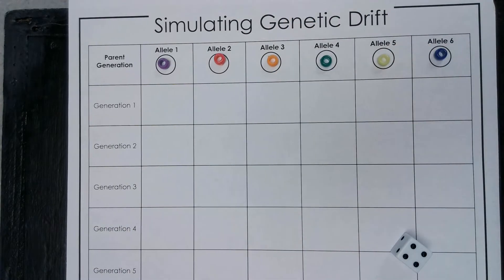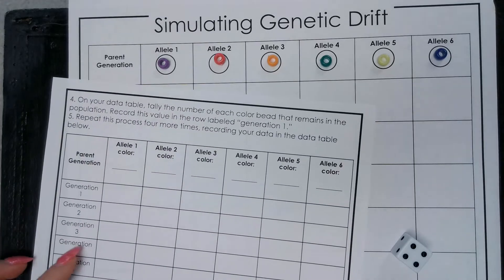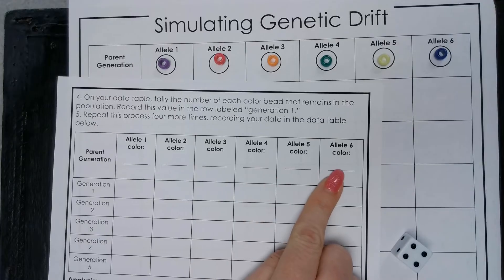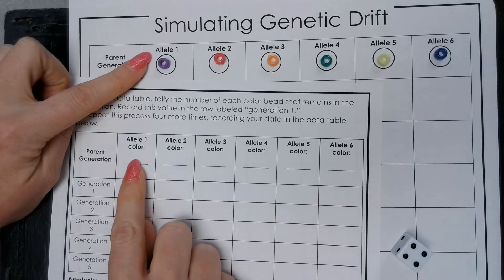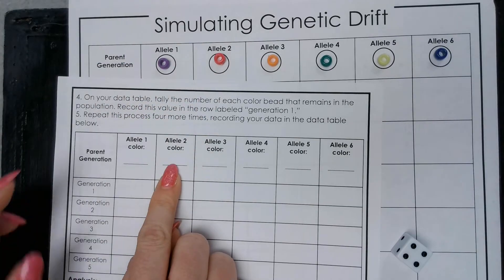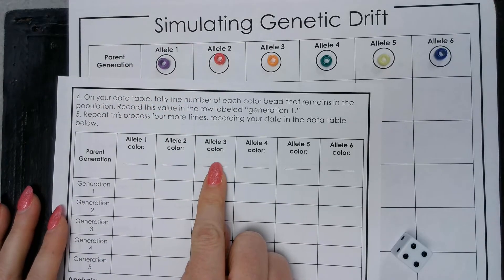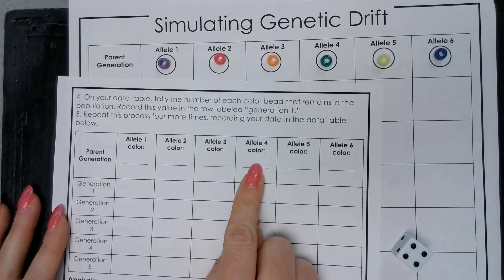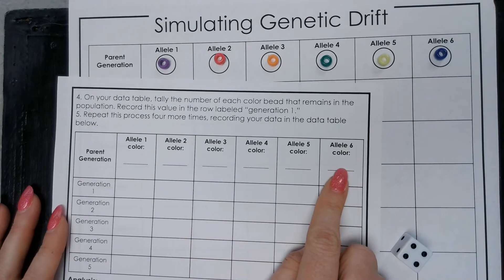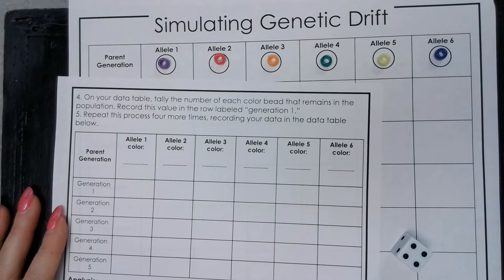If you're following along with your lab sheet, hop over to your table and record the color of these alleles. For allele number one, you're going to write purple. Allele number two, pink. Allele number three is orange. Allele number four, green. Five is yellow, and six is blue. You can pause the video if you need to do that.